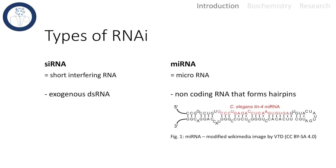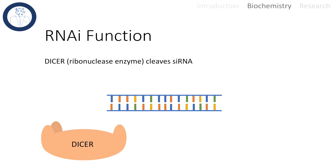There are two main types of RNA interference. On the one hand, we have siRNA, which is normally used to silence genes in model organisms. There are also micro RNAs, which are non-coding RNAs that form hairpin structures. Now we want to talk about the mechanism of how RNA interference works.